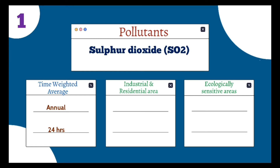Now let's individually see the pollutant standards. The first pollutant is sulfur dioxide (SO₂), and its unit is micrograms per meter cube. The annual standard for SO₂ in industrial and residential areas is 50 µg/m³, and for 24 hours it should not exceed 80 µg/m³. In ecologically sensitive areas, the annual weighted average should not exceed 20 µg/m³, and for 24 hours it should not exceed 80 µg/m³.